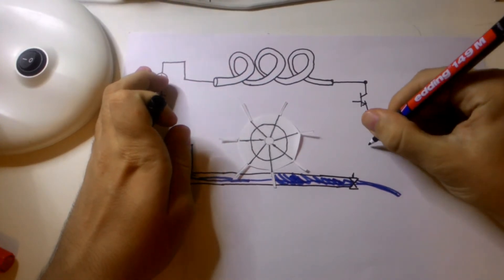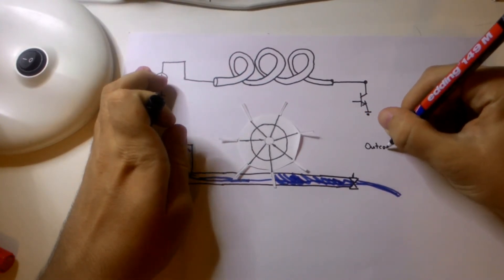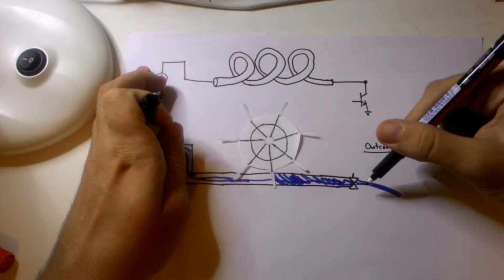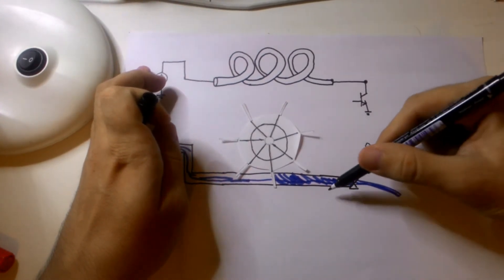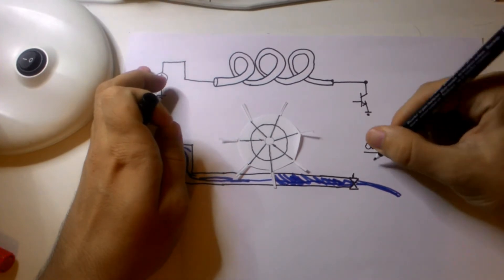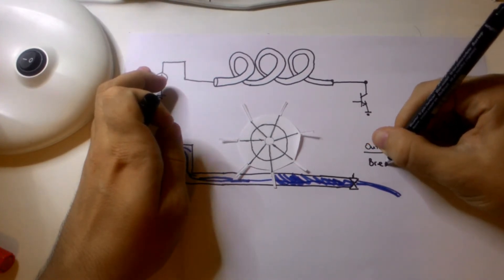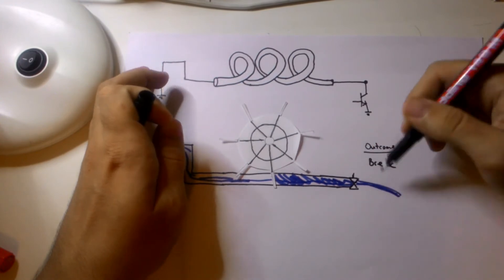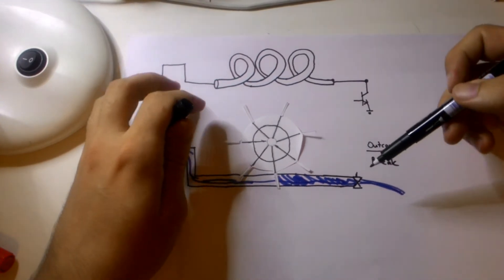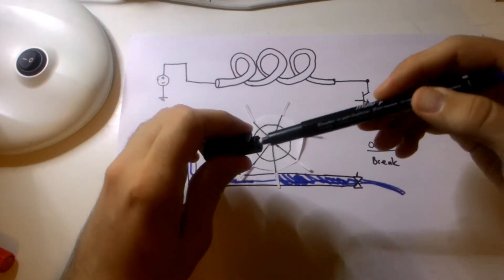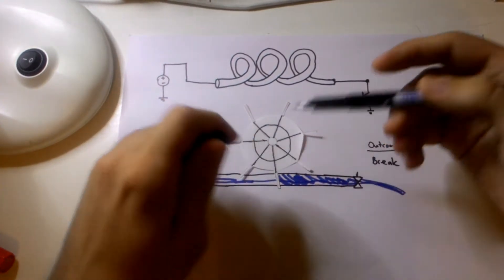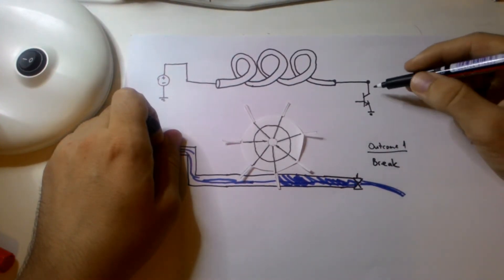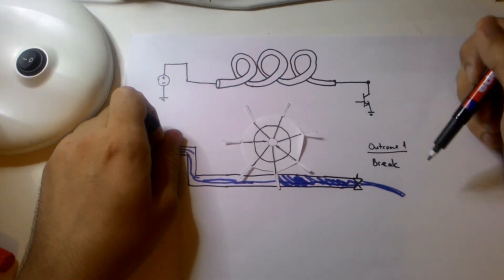Outcome one: my valve may not be able to withstand the intense pressure here and it may break. So when it breaks, the water will just continue to flow without any control. So you may have already guessed it and this corresponds to arcing in my electrical circuit.